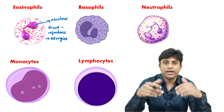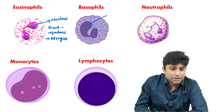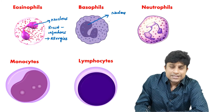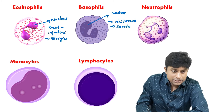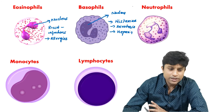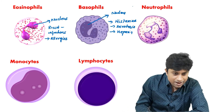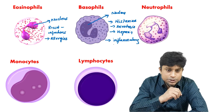Basophils have an irregularly lobed nucleus. Basophils are involved in secreting histamine, serotonin, and heparin. Histamine and serotonin are produced during vasodilation and vasoconstriction, whereas heparin acts as an anticoagulant. Basophils are specially involved in inflammatory responses.